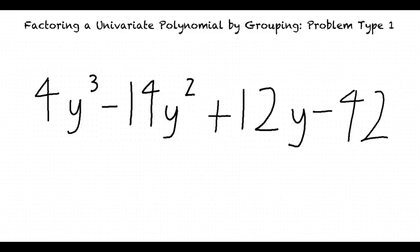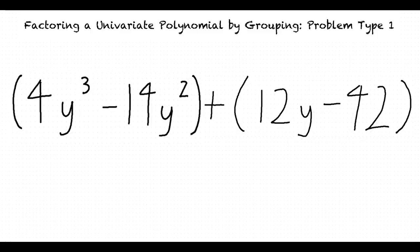Start by separating the first two terms and second two terms into two binomials. 4y cubed minus 14y squared plus 12y minus 42.